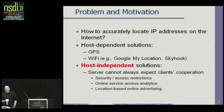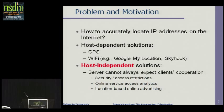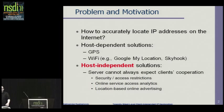All these systems enable the end user to figure out where he is — they don't let the server know where the user is. This is a fundamental difference. There are many scenarios in which the server would like to know where the user is, and the user either doesn't care or doesn't want to share this information. Examples are security applications, access restrictions, automatically checking the zip code where the user is coming from, online service access analytics, and location-based online advertising.